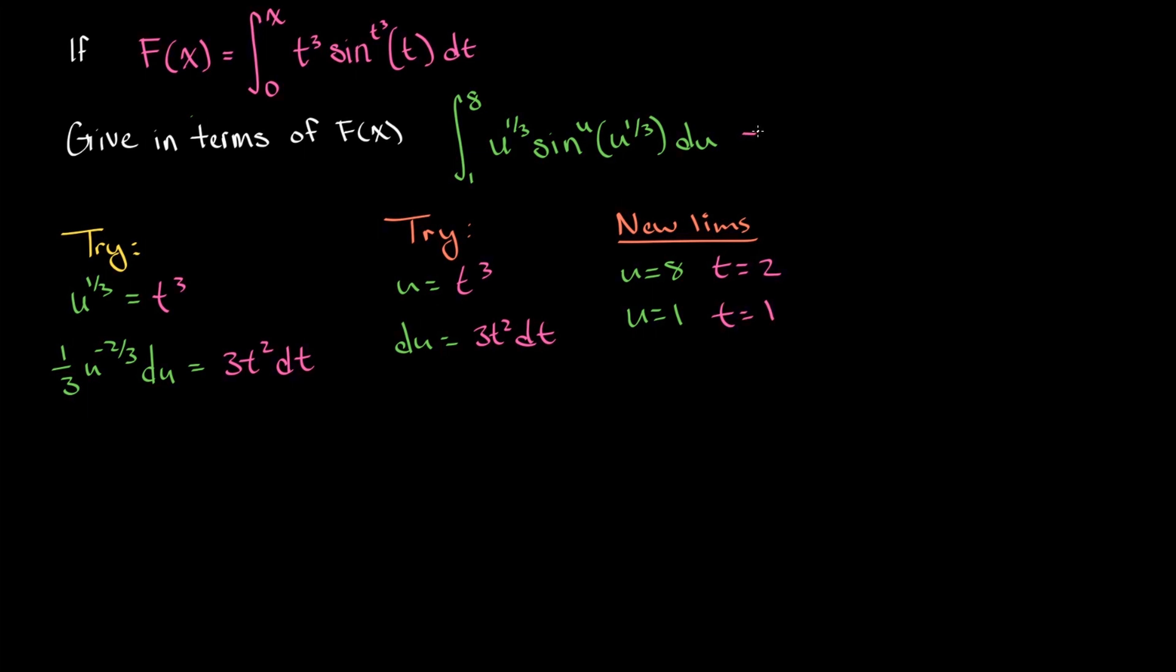So now we can rewrite this definite integral under our change of variables. We're going to have from 1 to 2, and wherever we see u, we're going to replace with t cubed. So we have t cubed to the 1 third power, and then we have sine of t cubed to the 1 third power. This sine function is raised to the u power, which is now going to be raised to the t cubed power. And then finally, this differential du now becomes 3t squared dt. So this is our definite integral under our change of variables.